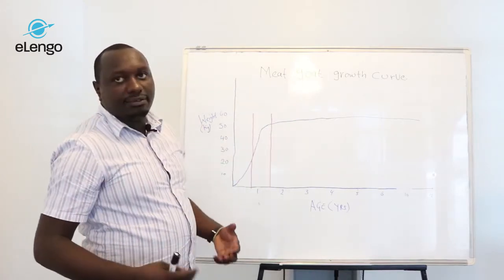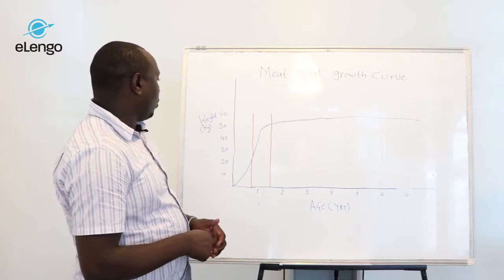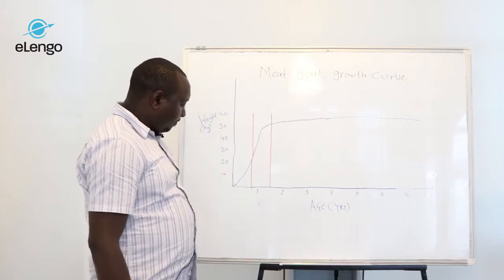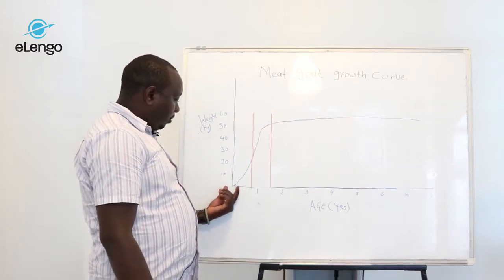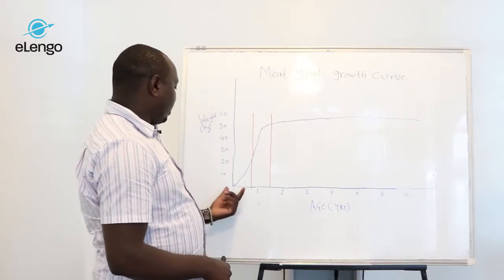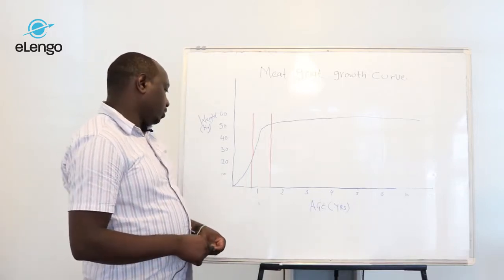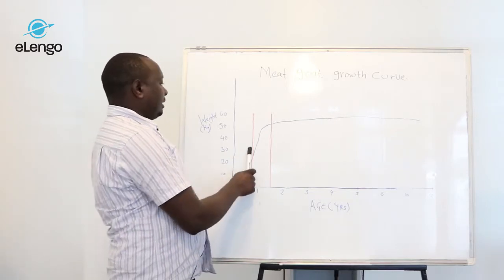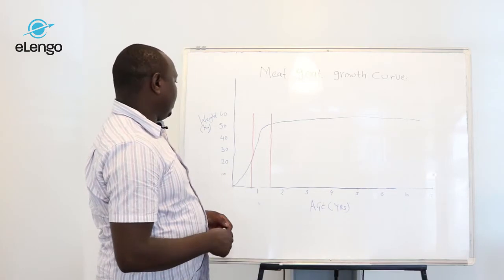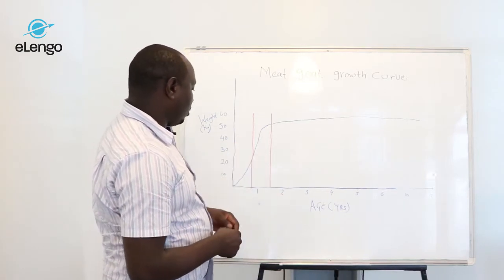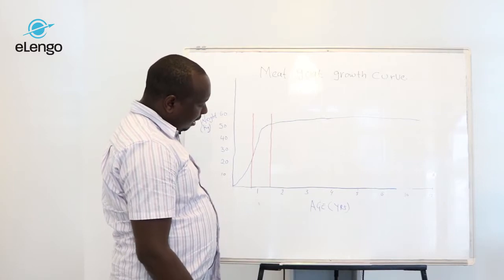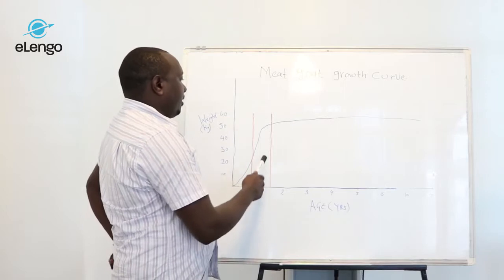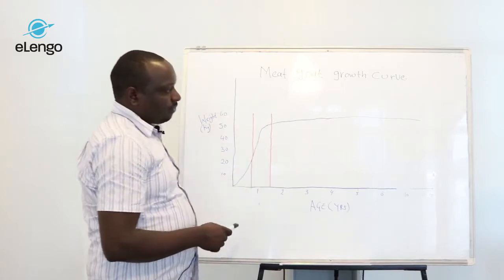You can see that the goat can accumulate weight from the birth weight, which in most cases is around 2 kilos to 3.5 kilos. This particular weight increases up to around 55 or 60 kilos within the first one to two and a half years. This is the right weight for the farmer to cull the animal for meat.